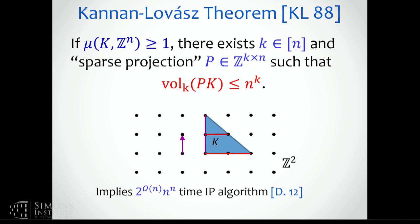This is what Kannan-Lovász proved. The proof is in essence an algorithm — it uses some generalized notion of an HKZ basis, and if you take it as such, you can actually compute these projections when you need them. This gives essentially an n to the n time algorithm — that's the smallest constant in the exponent we currently know. However, this still doesn't give us any improvement in terms of it being n to the order n.